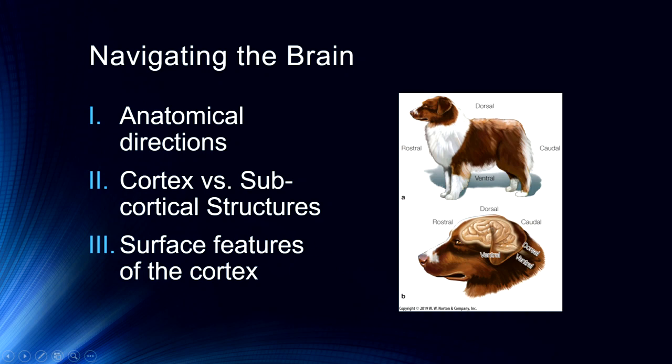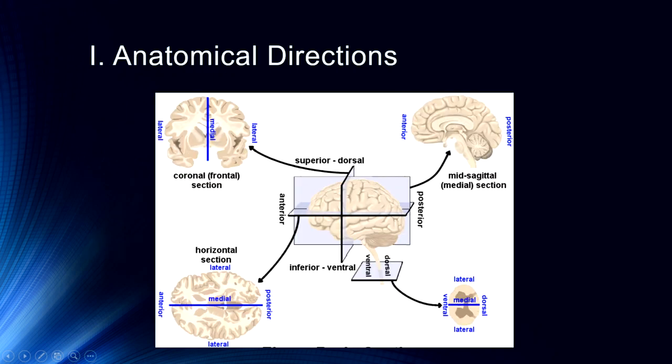Rostral and caudal are two anatomical terms that will often be used. I tend to use anterior and posterior. Anterior is the front side of the brain, posterior is the back side of the brain, but people will often use different terms. So let's get into these anatomical directions.